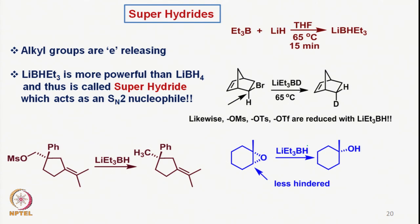Now we will move on to super hydrides, which are very strong and very sterically bulky reducing agents. For example, lithium triethyl borohydride is one of the super hydrides where alkyl groups are attached to the reducing agent. They are electron releasing and therefore the reactivity of such hydrides is very high. This lithium triethyl borohydride is much more powerful than lithium borohydride and is called a super hydride, which also acts like a nucleophile in an SN2 fashion.